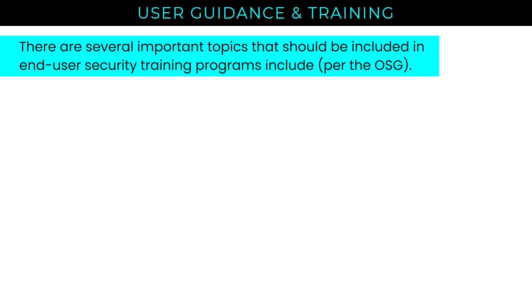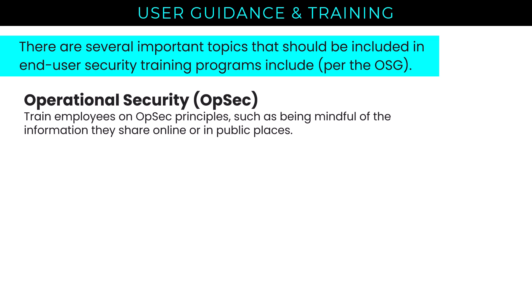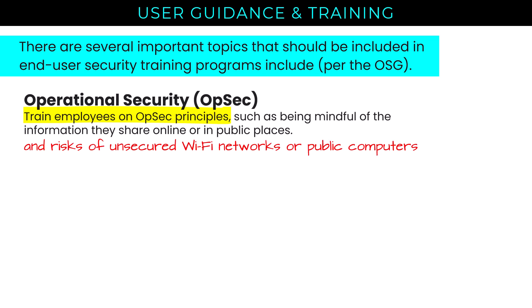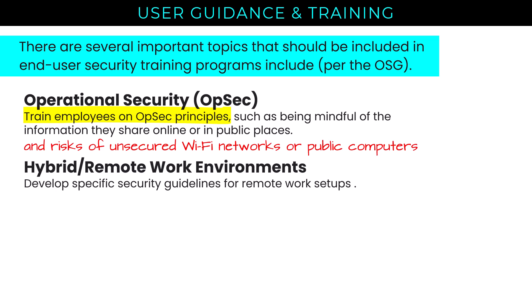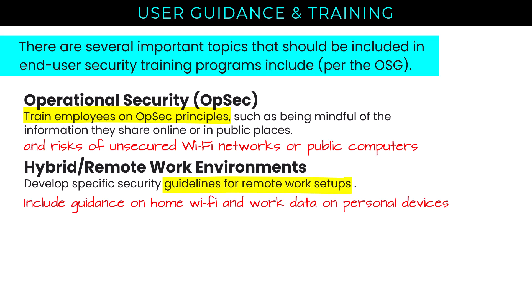To wrap up user guidance and training: operational security training should teach employees to be mindful of information they share online or in public places, and the risks of unsecured Wi-Fi networks or public computers. With hybrid and remote work now very common, we need to develop specific security guidelines for remote setups — including guidance on home Wi-Fi security and work data on personal devices, establishing guardrails and best practices for any use of personal devices for work.